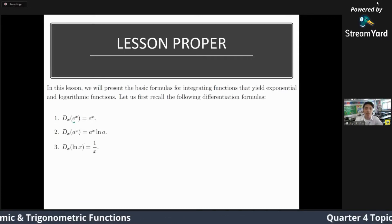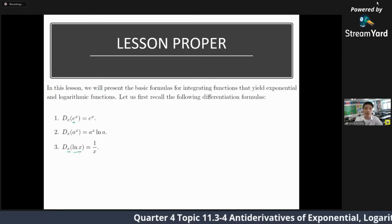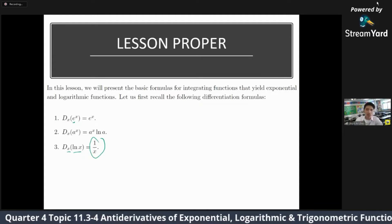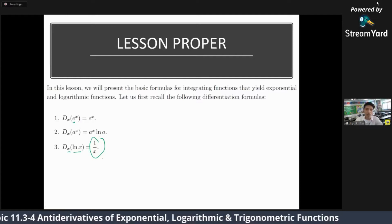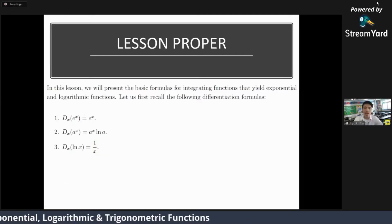And lastly, the third is the derivative of ln of x. And we all know with respect to x, the derivative of ln of x with respect to x, we all know that is 1 over x. So we have to recall that because this will be the basis for our antidifferentiation.